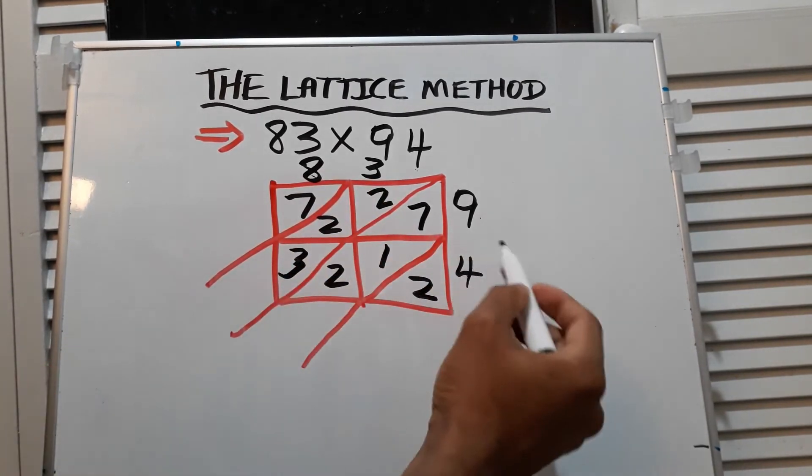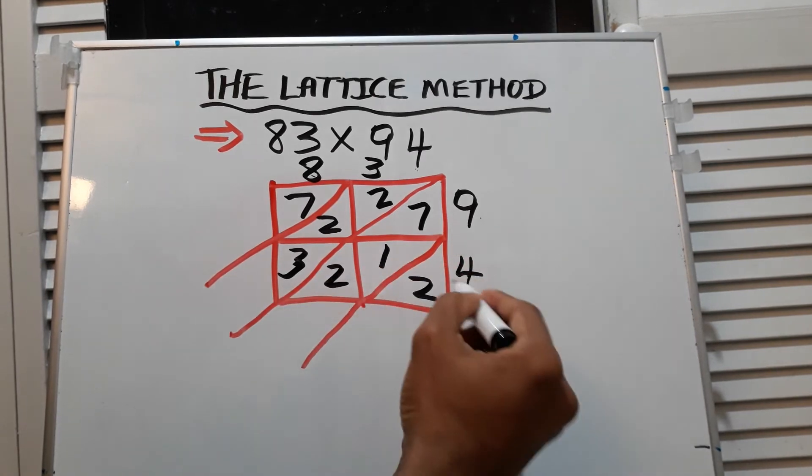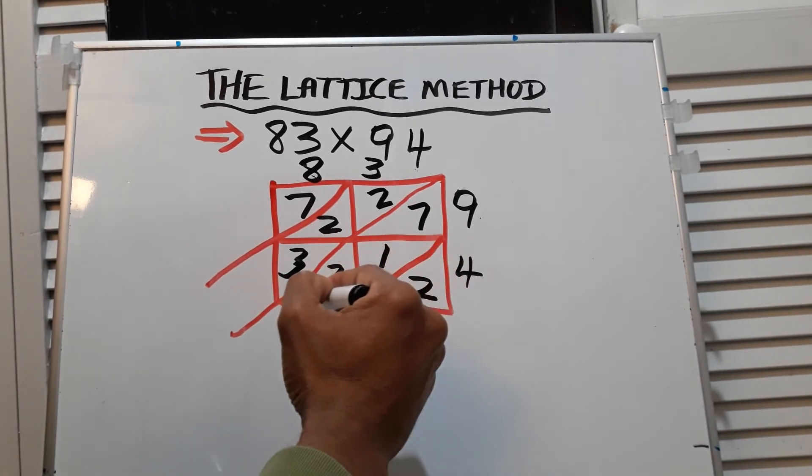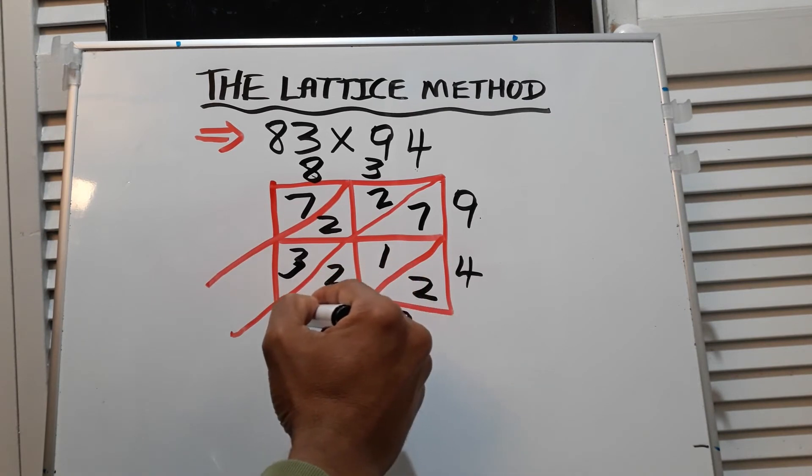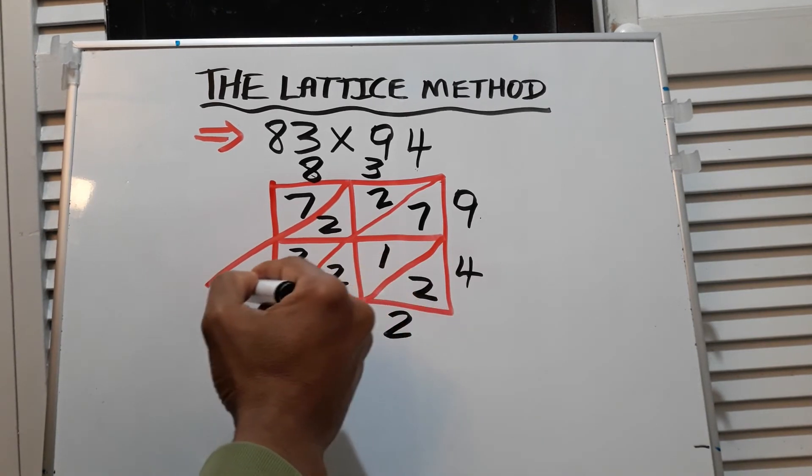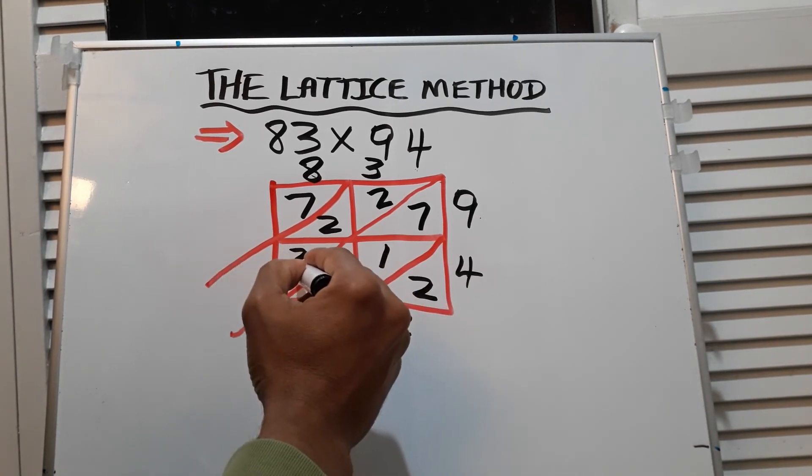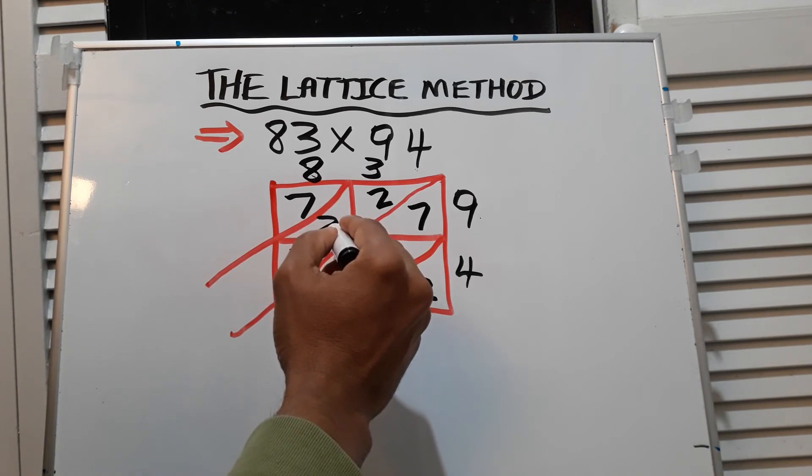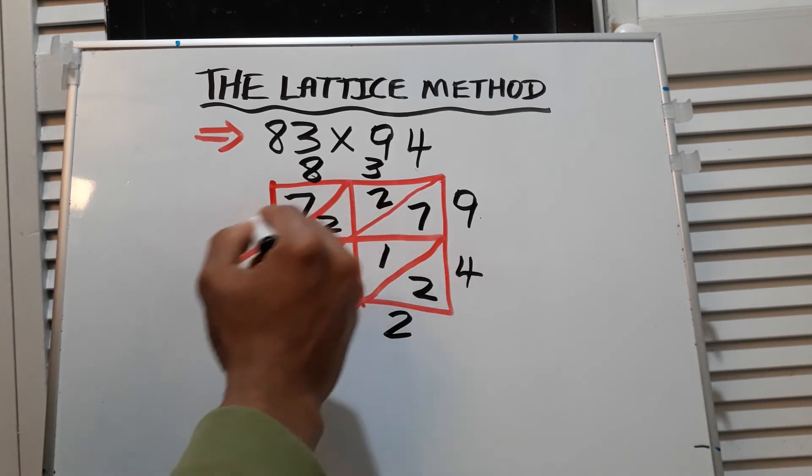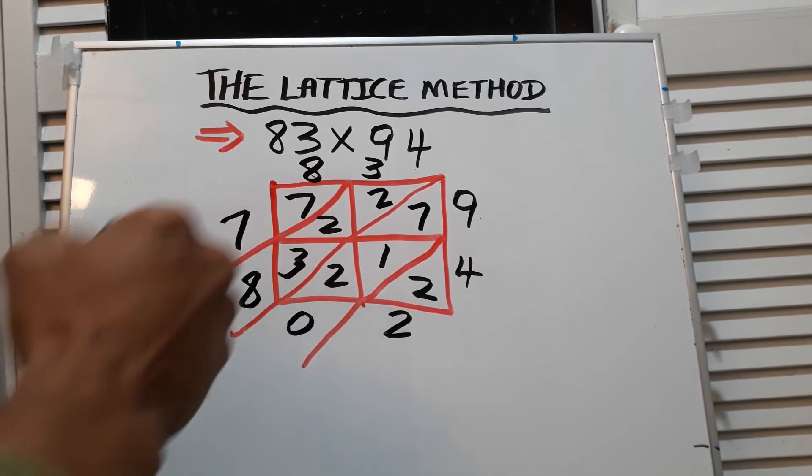And then we add as normal from right to left. This is a 2 diagonally. This is a 10, so the 0 goes here and the 1 goes over. 1 plus 3 is 4, 4 plus 2 is 6, 6 plus 2 is 8, and 7 by itself. So these numbers here...